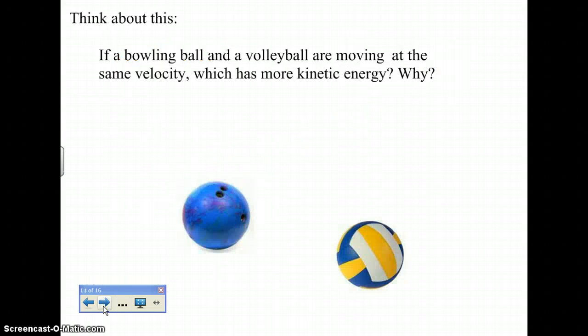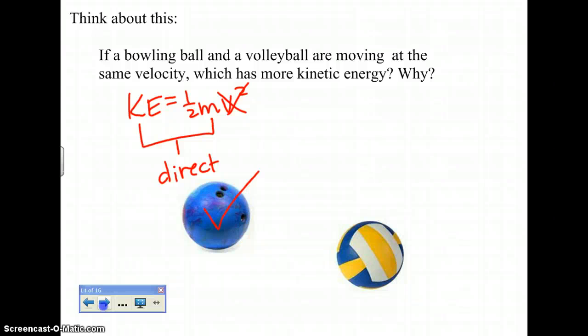Okay, so think about this. Bowling ball and a volleyball moving at the same velocity. So in KE equals 1/2 mv squared, velocity is your constant. So which would have more kinetic energy? Well, the relationship between those two variables is a direct relationship. So therefore, as mass increases, your kinetic energy is also going to increase. So therefore, the heavier object, which we can safely assume is the bowling ball, will have more kinetic energy.